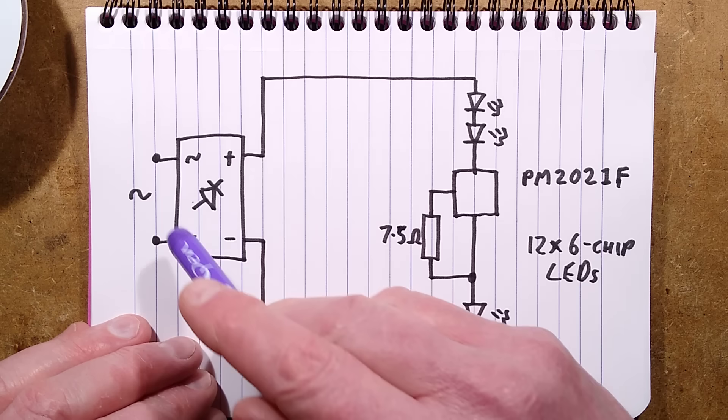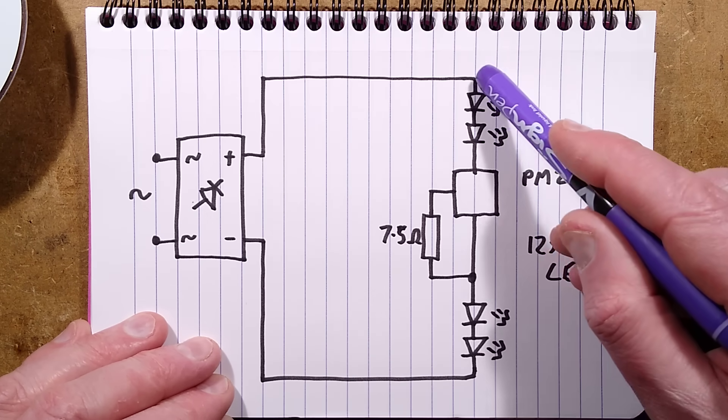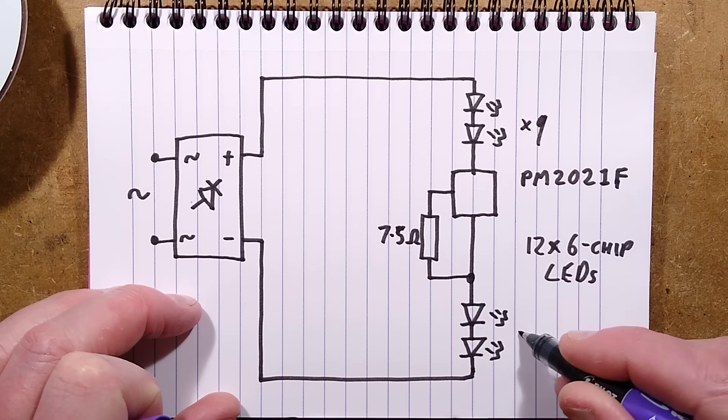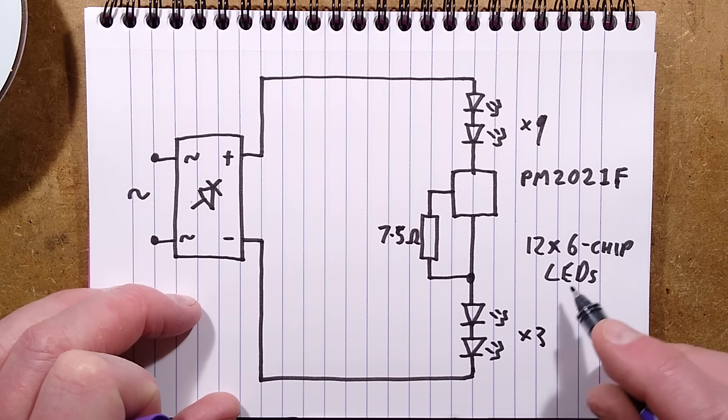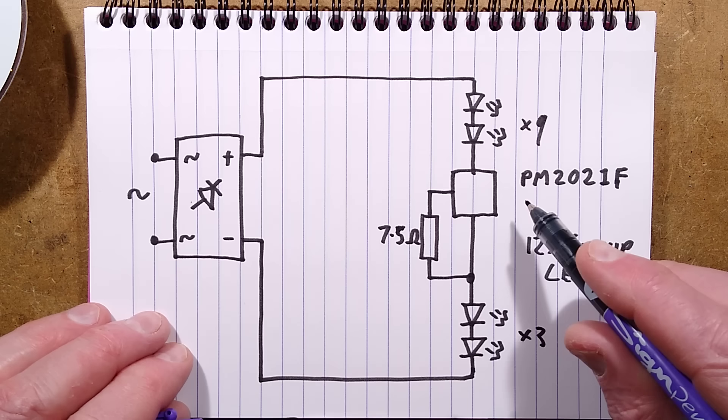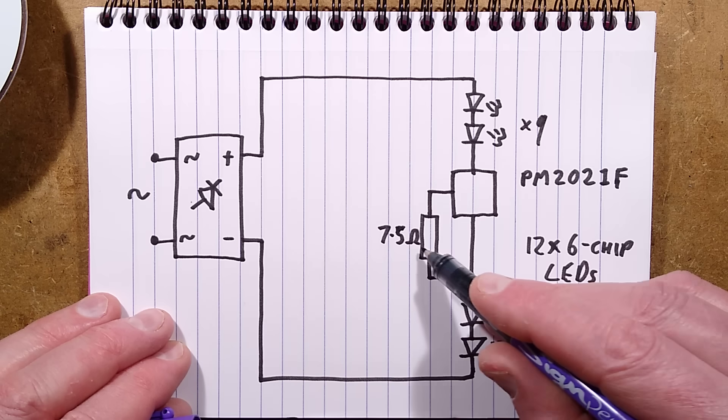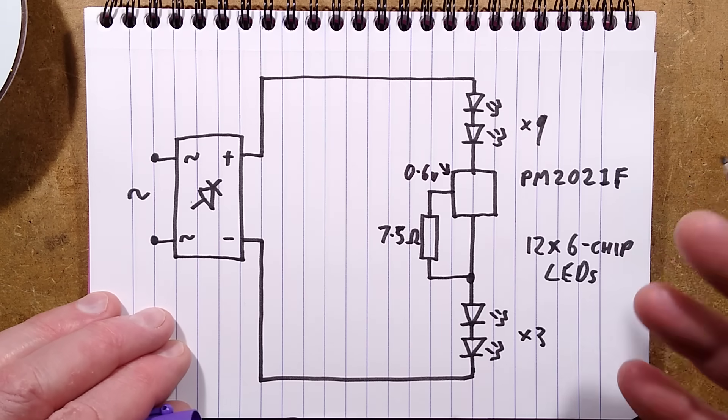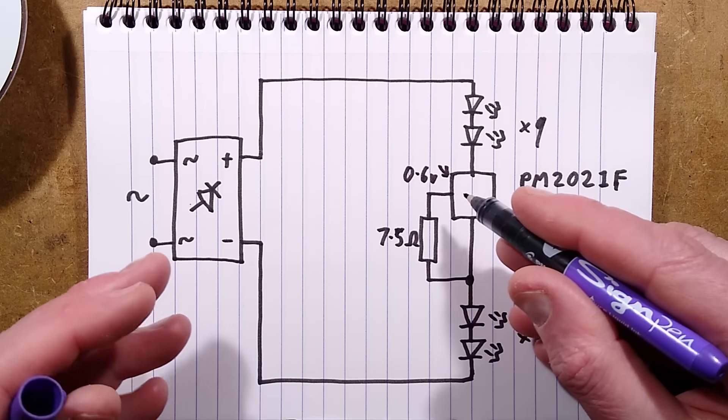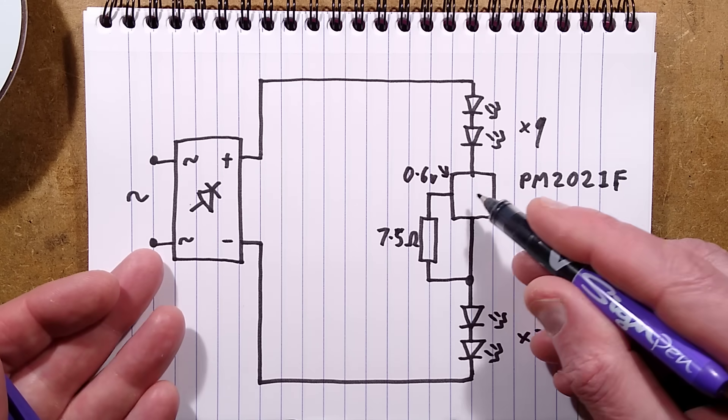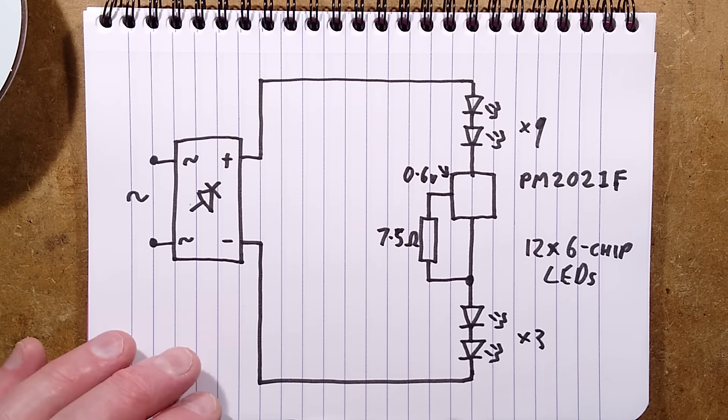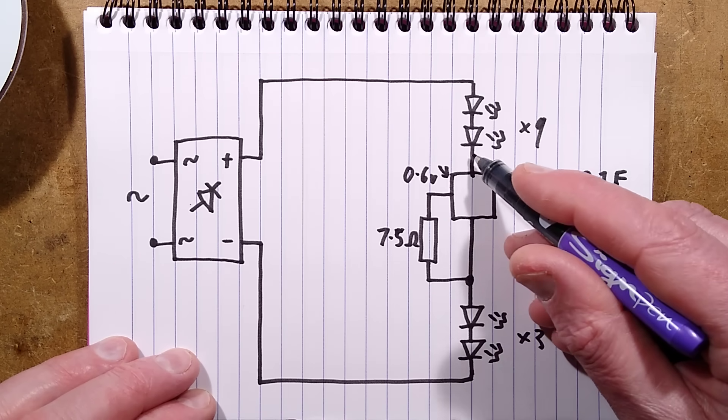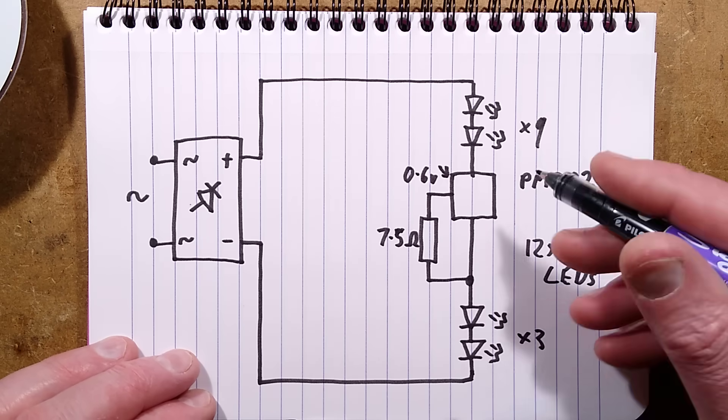We have the AC coming on, then the bridge rectifier and then it goes through a bunch of LEDs. It effectively goes through nine and this is times three to give a total of 12, six chip LEDs and then it's got the PM2021F here with its current sense resistor. It's looking for 0.6 volts basically a transistor forward biasing voltage to actually control the regulator circuitry in there and that means that ultimately they're treating it almost as a two-pin component just in line with the series circuit because it could effectively go anywhere.